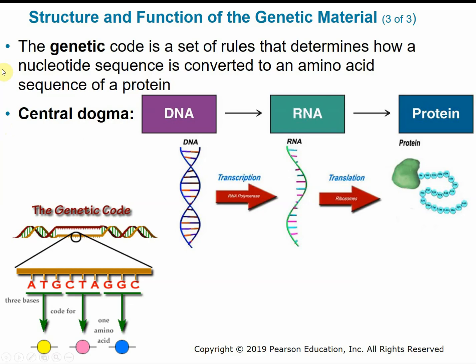The genetic code is a set of rules or instructions that determine how a nucleotide sequence is converted into a functional amino acid and protein. Remember the central dogma of biology: DNA is transcribed into RNA, which is then translated into protein. It's the sequence — the order of the bases or letters in the genetic code — that determines the arrangement of the amino acids and the shape and function of the protein.